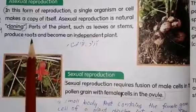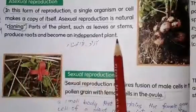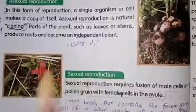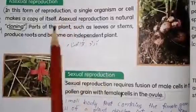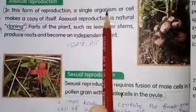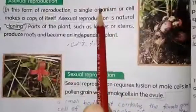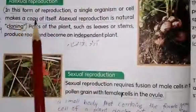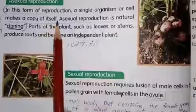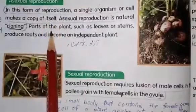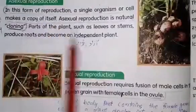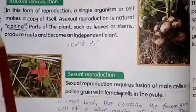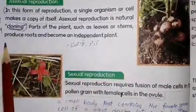Parts of the plant such as leaves or stem produce roots and become an independent plant. In this type of reproduction only one organism is involved that makes a similar copy of itself. That is why it is called a cloning process — meaning creating a copy.